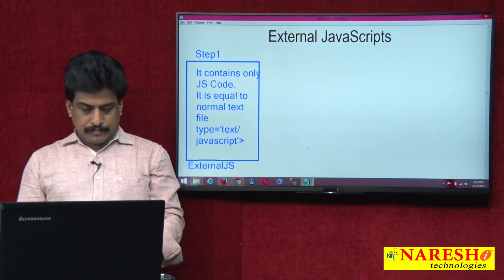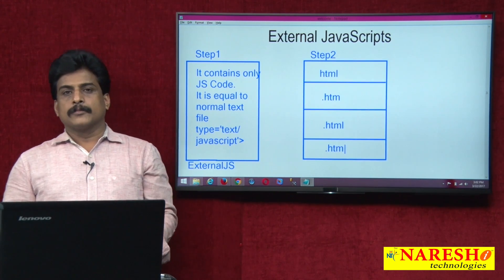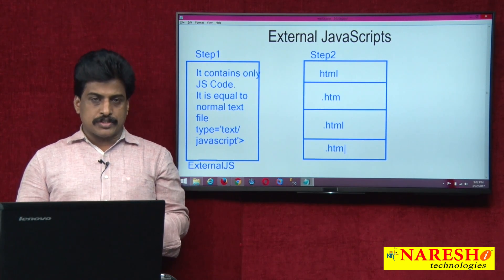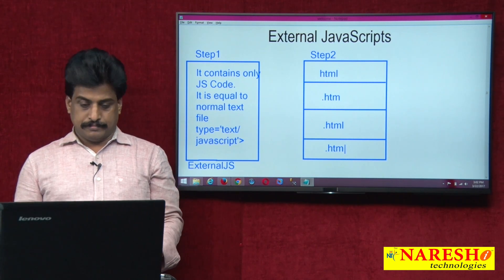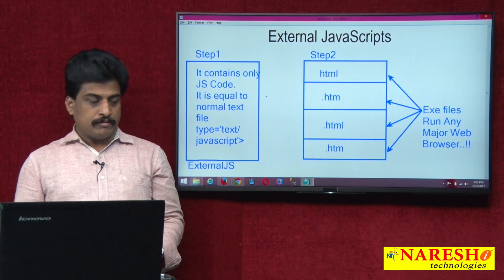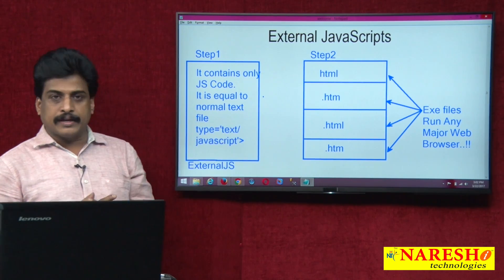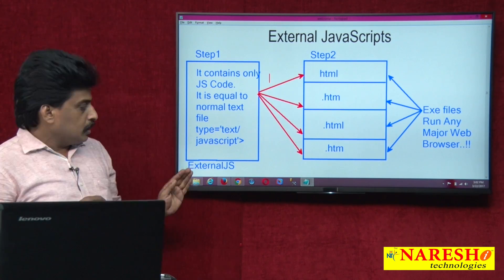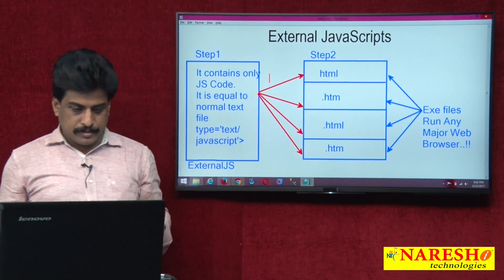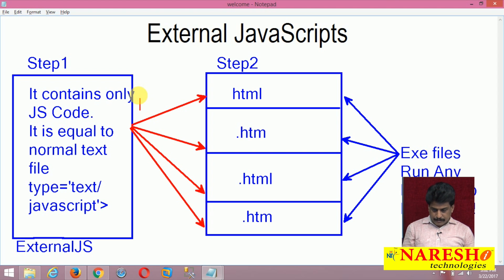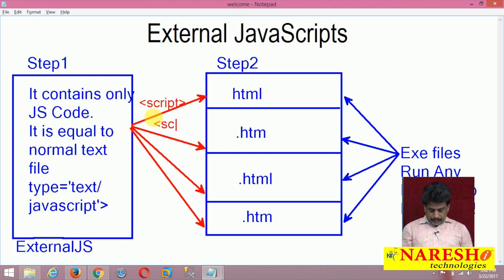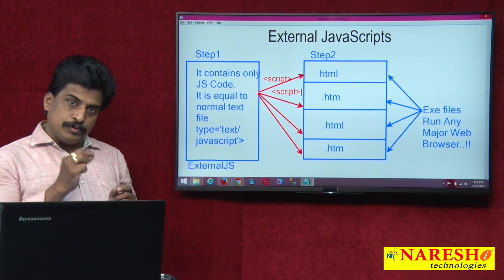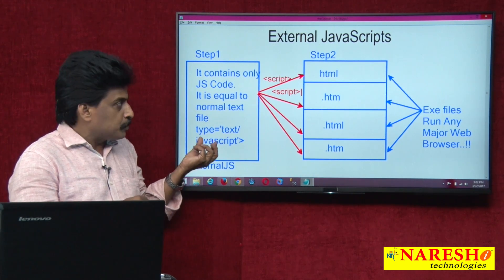Now Step 2: creating the HTML files. Any number of HTML files you can create — all HTML files are executable files that run on any major web browser. Step 1 and Step 2 are both successfully completed. Now how do you link the JavaScript to the HTML files? Using the script tag with the 'src' attribute. You write the script tag with src attribute and provide the JS file path.